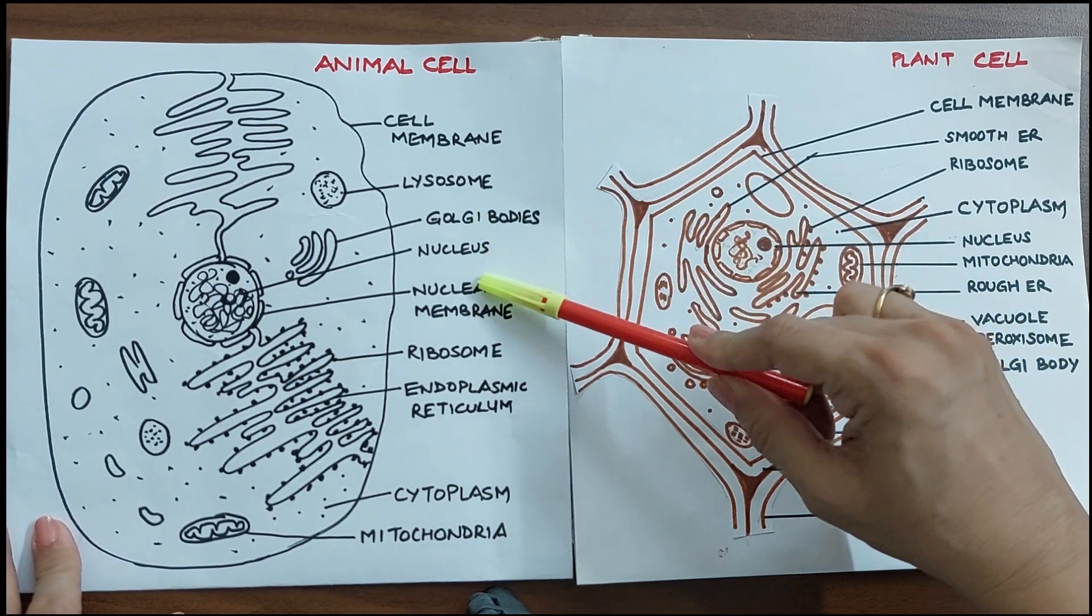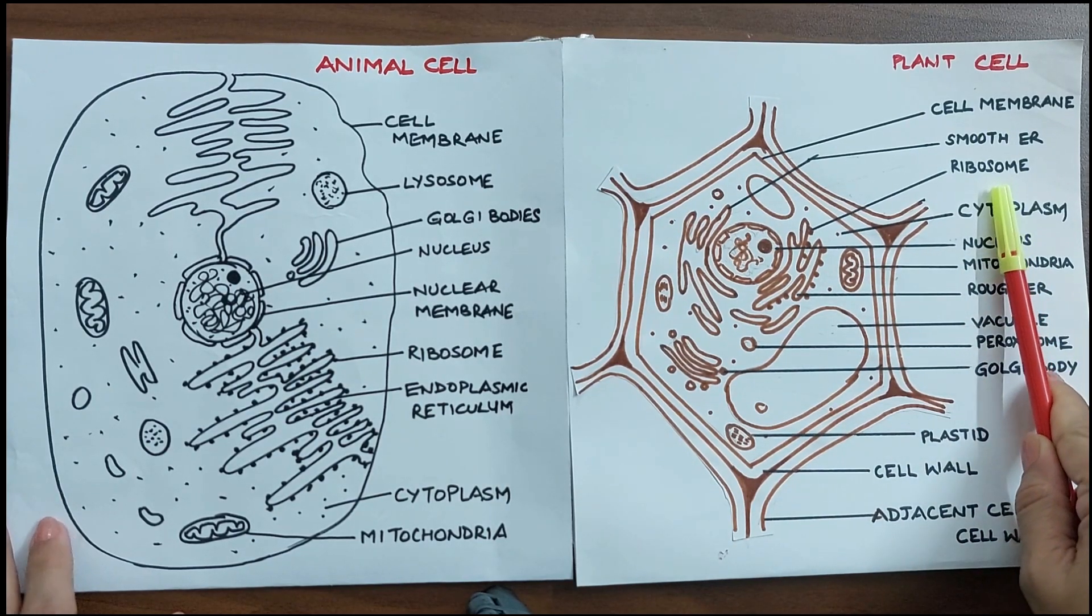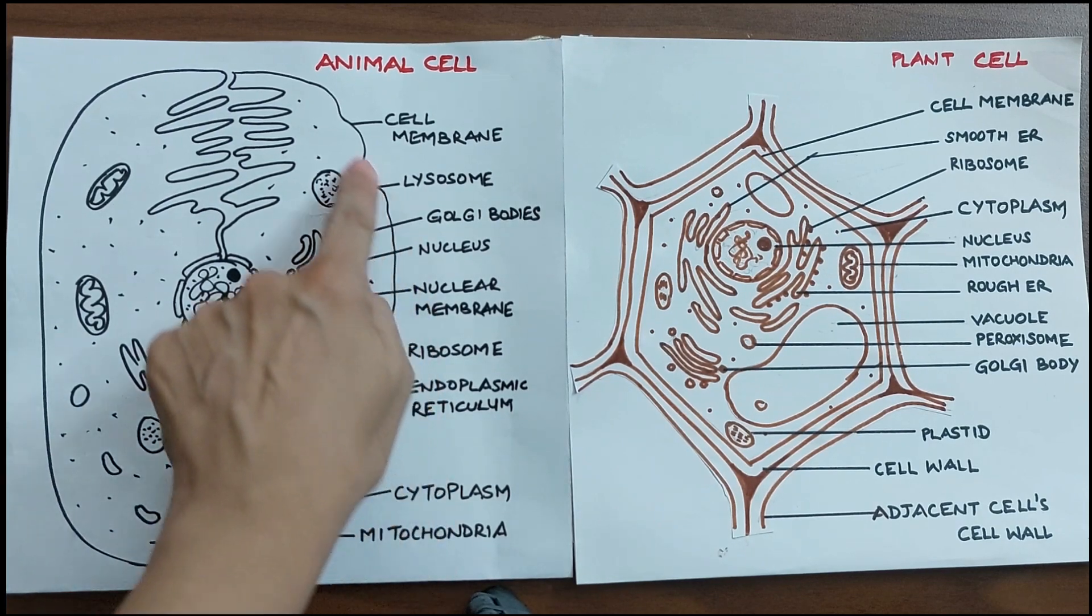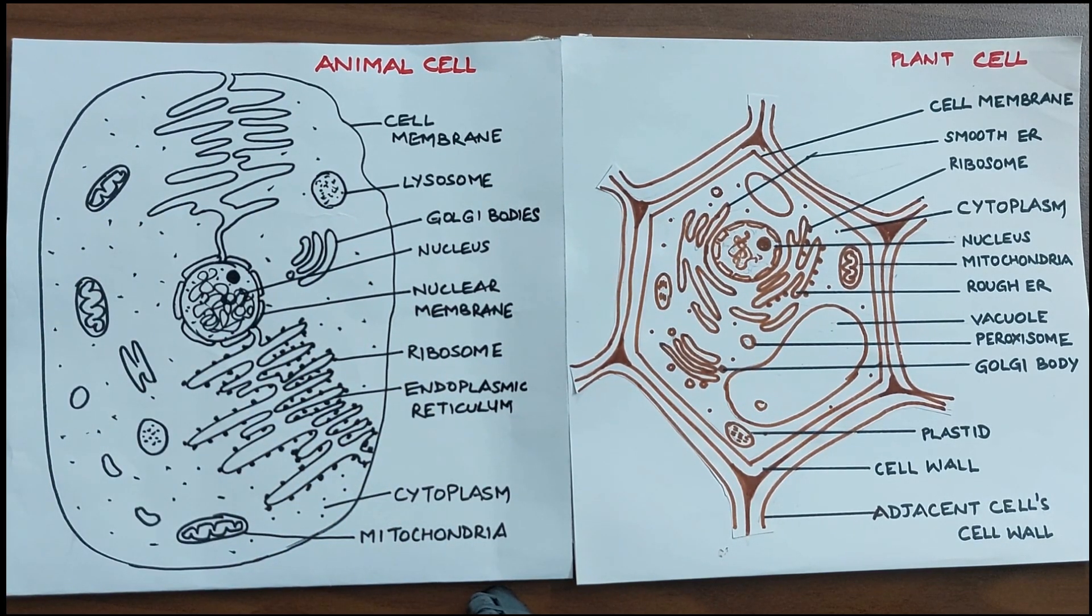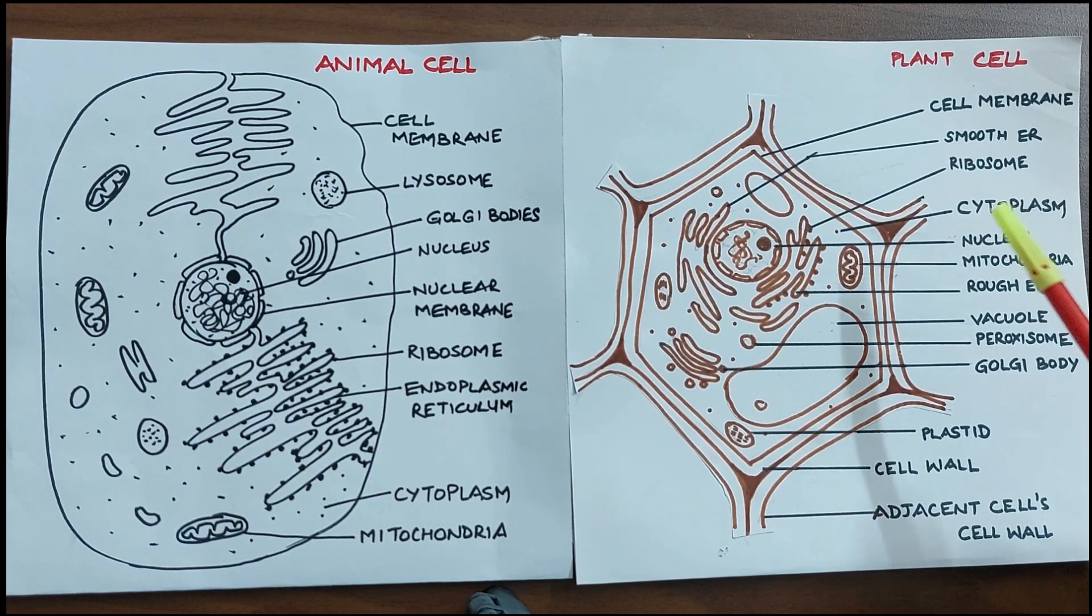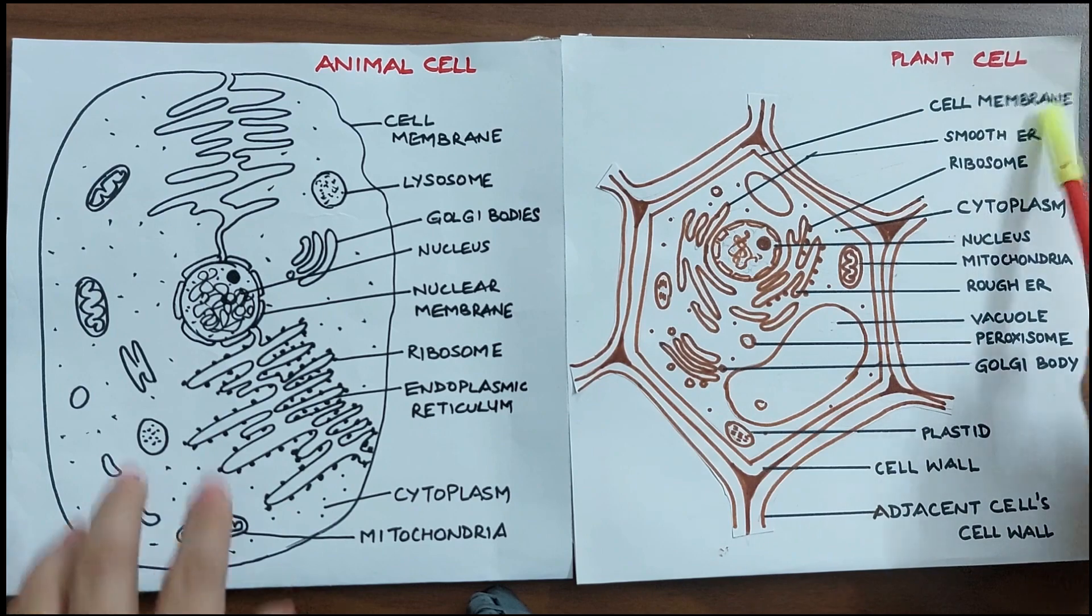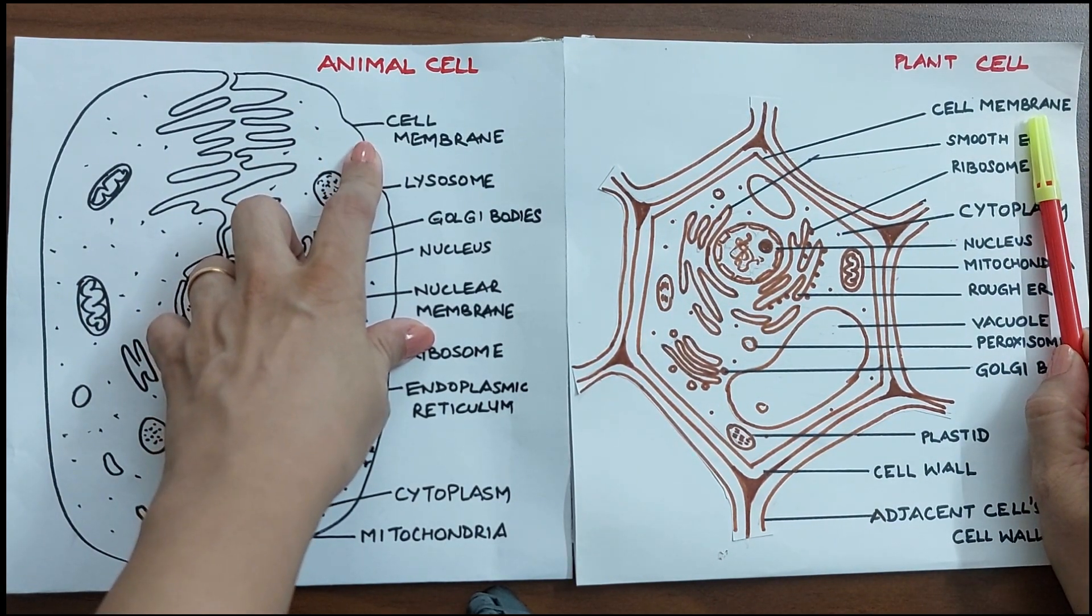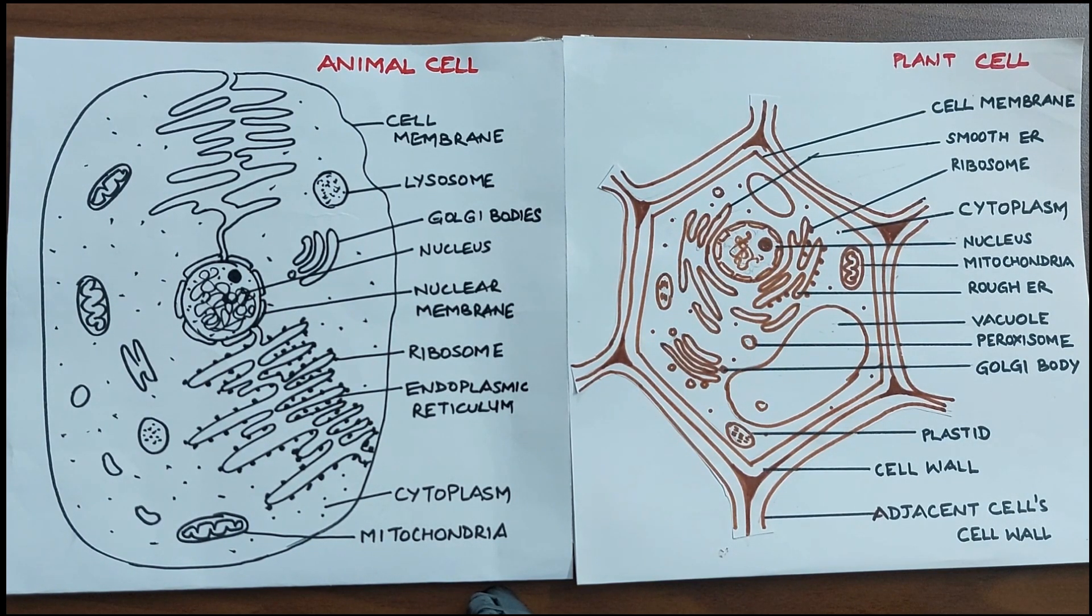Let us look at the animal and the plant cells. The outermost structure of the animal cell is made up of a membrane which is made of lipids and proteins. This membrane is known as the cell membrane. The plant cell also has such a membrane, so this is common in both plant and animal cells. This cell membrane forms a mechanical barrier and it protects the inner contents of the cell.